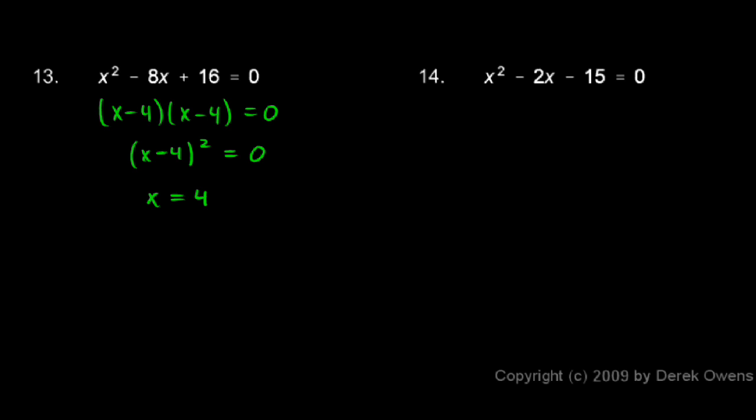At number 14, we need to factor again the quadratic expression over here on the left side. x squared minus 2x minus 15, and that factors as x minus 5 times x plus 3.